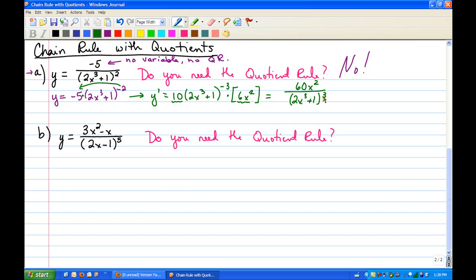So we have 60x squared over the quantity 2x cubed plus 1 cubed. And that would be the final answer for that one. So that one's pretty easy.